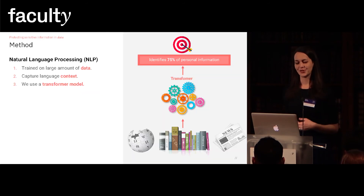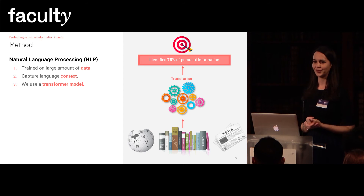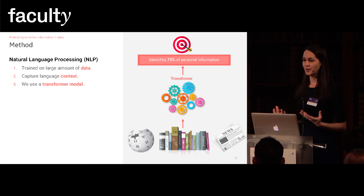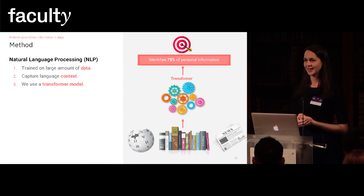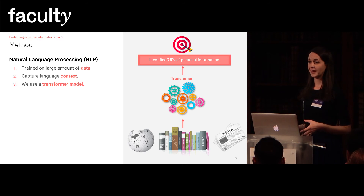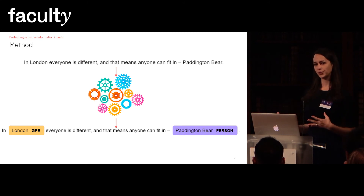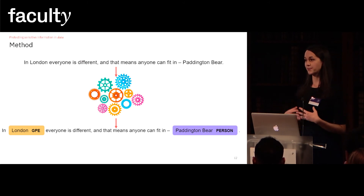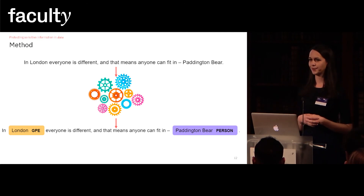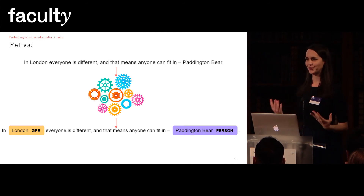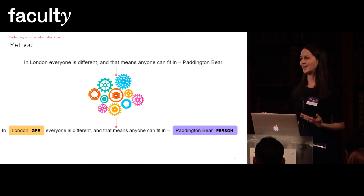On the other hand, natural language processing offers improvements over traditional rule-based methods. By learning from large amounts of data, NLP models can capture the language context, and hence they eliminate the need for hard-coded rules. In our project, we used an NLP transformer model which was able to identify 75% of personal information. This model is trained to output a list of words and their corresponding labels, which fall in different categories such as person, location, or organization. In the example here, the model was able to output two different entities and their corresponding labels.